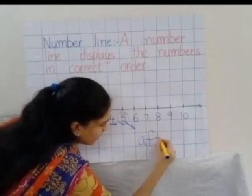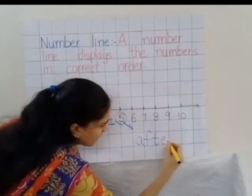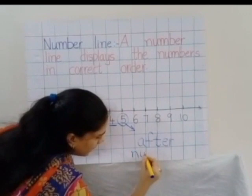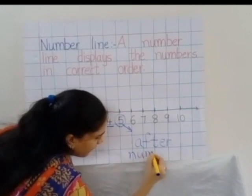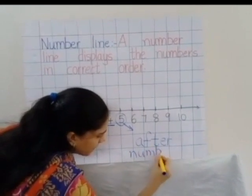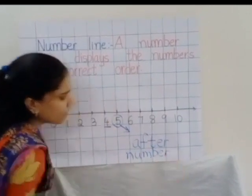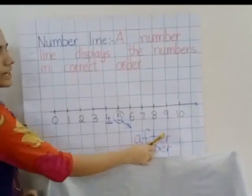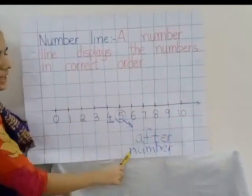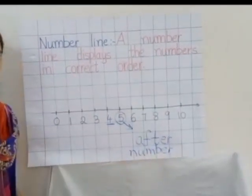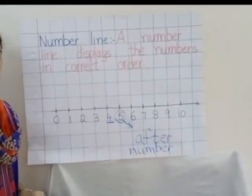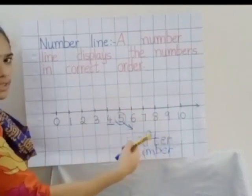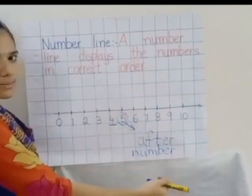A-F-T-E-R, after number. A-F-T-E-R, after number. So 5 will be the after number. Your right side will be the after number.